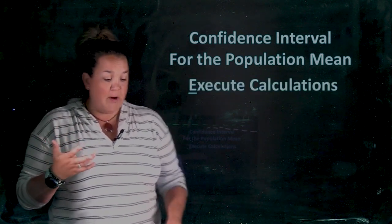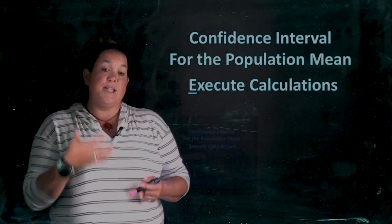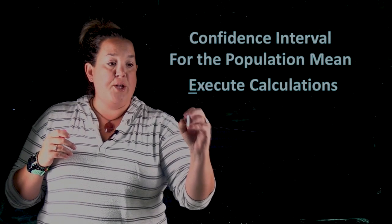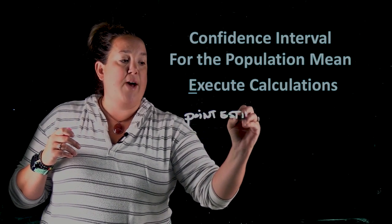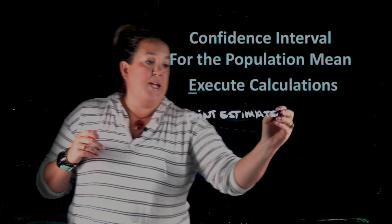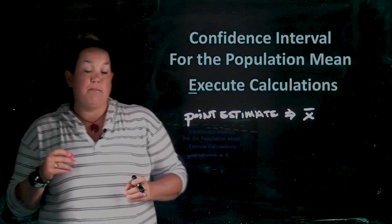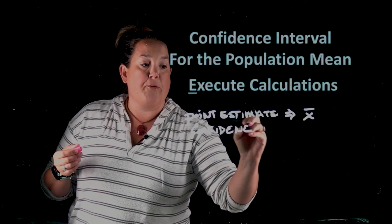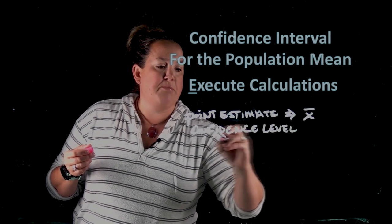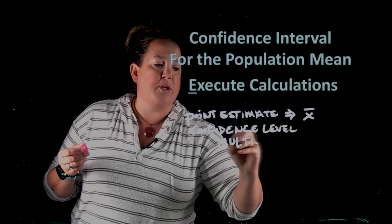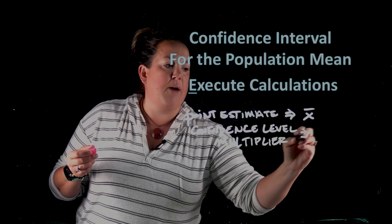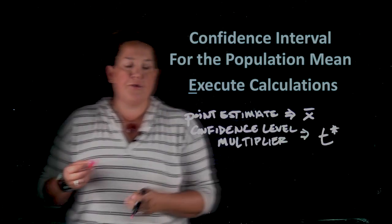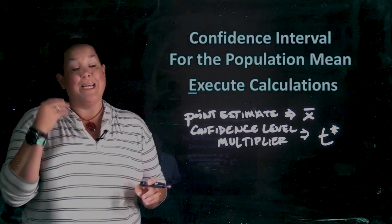The next thing is executing calculations, and these steps need to be done in order because of the way the problem builds. First, you need your point estimate — the value that estimates your population. Here, because we're trying to estimate mu, our point estimate is going to be x-bar. Then the next thing you need is the confidence level multiplier. With these confidence intervals, we're going to switch to a different distribution — we'll be using the t-distribution and t-star multipliers.